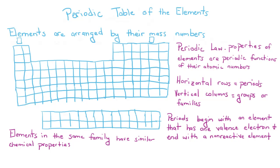You have the horizontal rows which are called periods and the columns are called groups or families. Periods begin with an element that has one valence electron and ends with a non-reactive element. And elements in the same family have similar chemical properties.